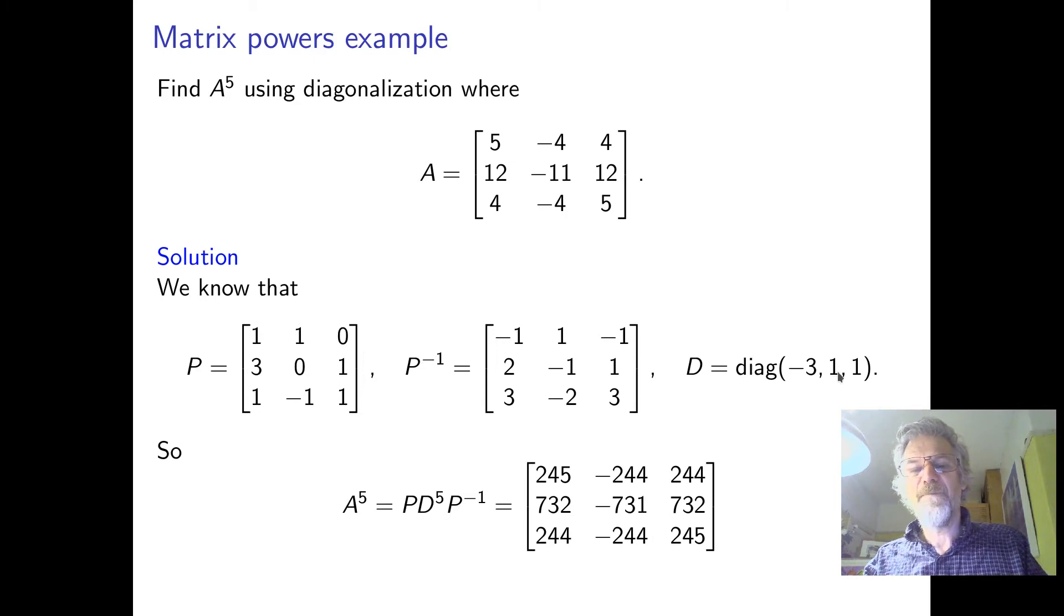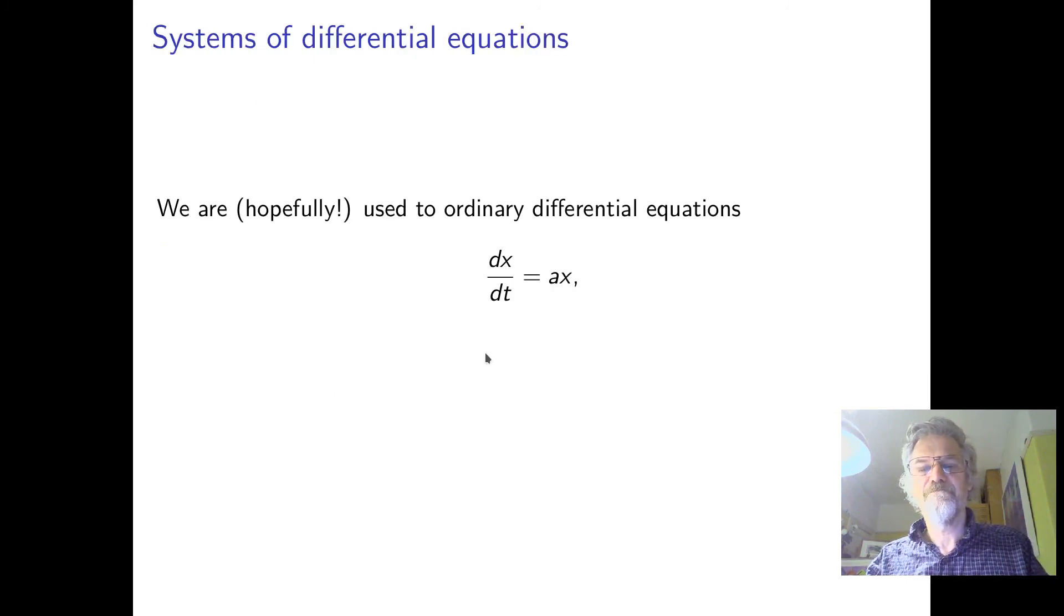And then, we get this matrix, minus three to the five, and one, one. And then we put it back in the P, D to the five, P inverse formula, and that gives us A to the five, with a lot less calculation.